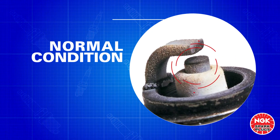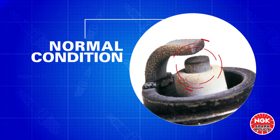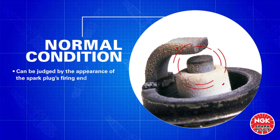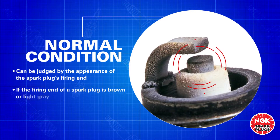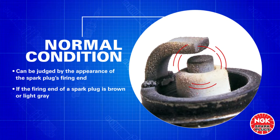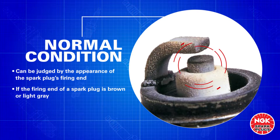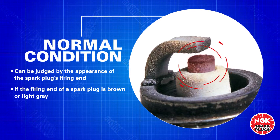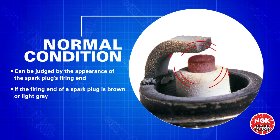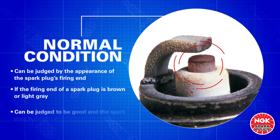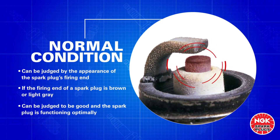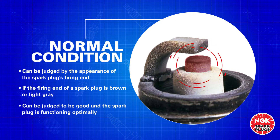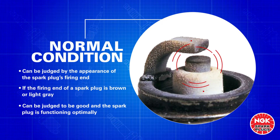Normal Condition. For a normal condition spark plug, the firing end is color brown or light gray. The condition can be judged to be good and the spark plug is functioning optimally.